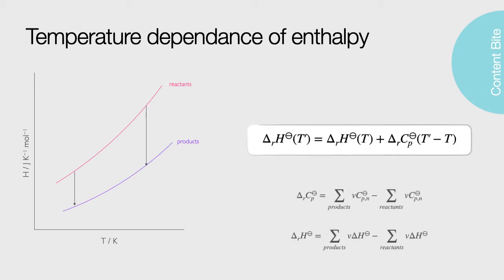For moderate changes of temperature, maybe up to 100 Kelvin, the change in the enthalpy of reaction may be determined by one of Kirchhoff's laws: namely, the enthalpy of the reaction at the new temperature is the enthalpy at the known temperature, plus the difference in heat capacities of the products and reactants multiplied by the temperature difference. The reason this is only true for a limited temperature range is because we are assuming that the heat capacity itself is not dependent upon temperature.